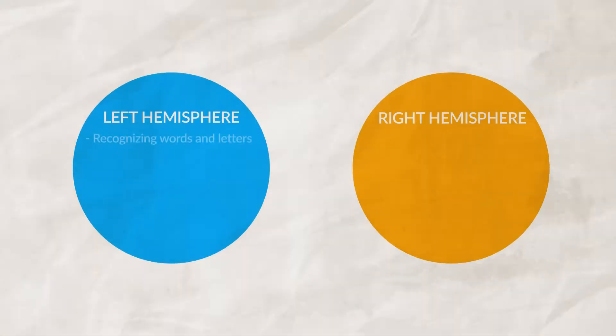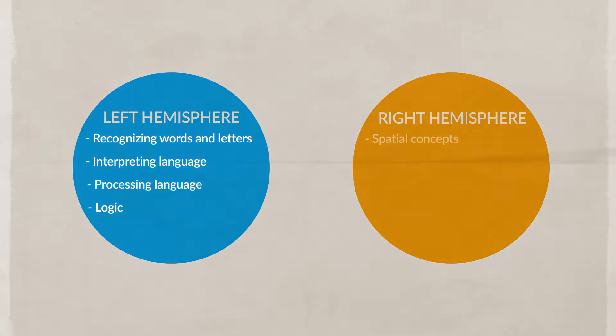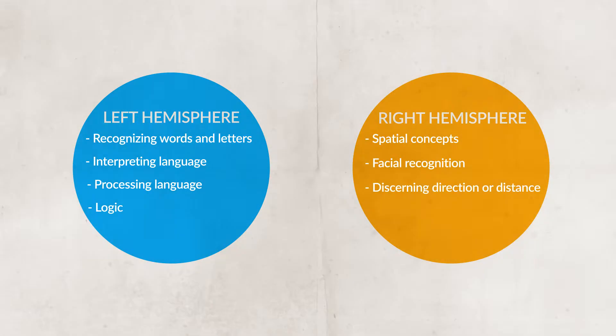Split-brain research shows us that no one is purely left-brained or right-brained. The left hemisphere is generally better at recognizing words, letters, interpreting language, processing language, and logic, while the right hemisphere is better at spatial concepts, facial recognition, and discerning directions or distance. The left motor cortex controls movement on the right half of your body, and the right motor cortex controls movement on the left. Similarly, your left somatosensory cortex controls perceptions of touch on the right side of your body and vice versa. All of this is known as brain lateralization — the differing functions of the left and right hemispheres, like divisions of labor. At the end of the day, all of us use both hemispheres to accomplish different tasks.